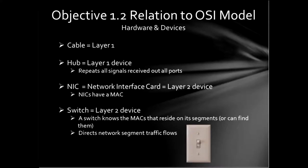When talking about cables, those are layer 1. Hubs are a layer 1 device — the reason they're layer 1 is they don't care anything about addressing. A hub receives a signal on a port and repeats that signal on every port it has. A switch is a layer 2 device — it knows MAC addresses, it's a whole lot smarter and faster than a hub. When it receives a signal on a port, it looks at the destination MAC address, checks its MAC address table, and only sends that signal out the port where it knows that MAC address will receive it.